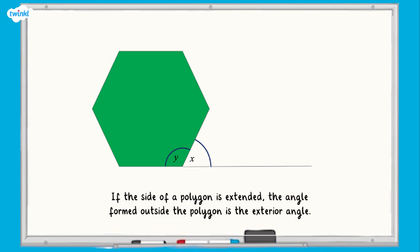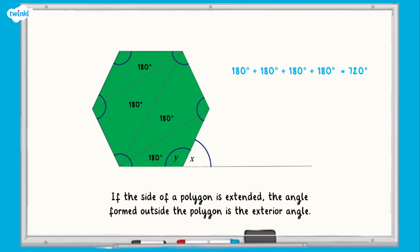Let's move on. We can use our knowledge of interior angles in regular polygons to calculate the exterior angles. These are the angles outside the shape. In this example, angle x is an exterior angle. To calculate angle x, we need to also calculate angle y. The total of the interior angles in a regular hexagon will be equal to 720 degrees, as the polygon can be partitioned into four triangles.